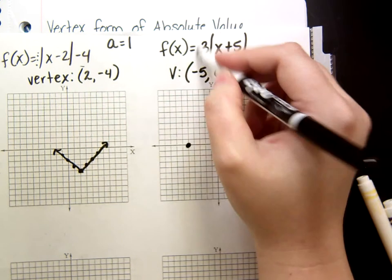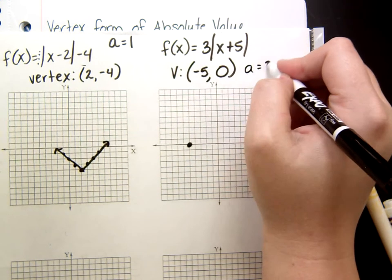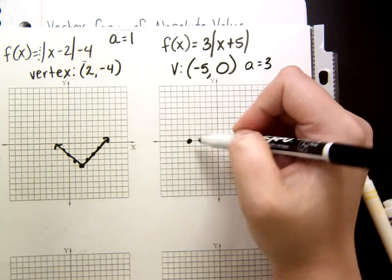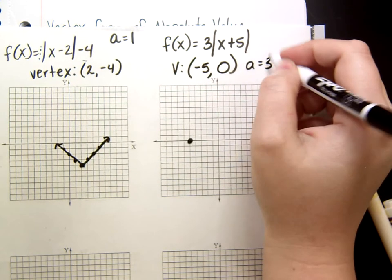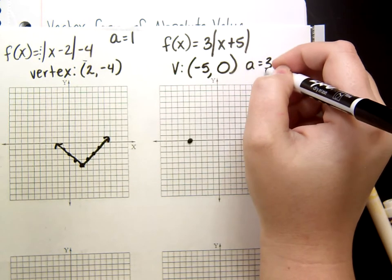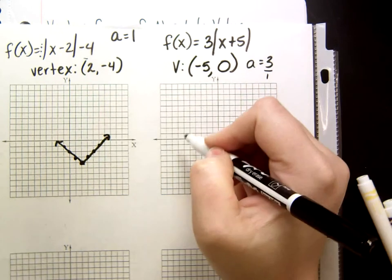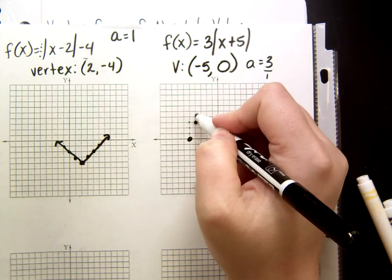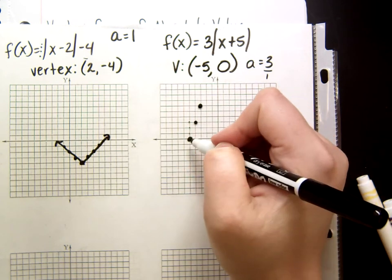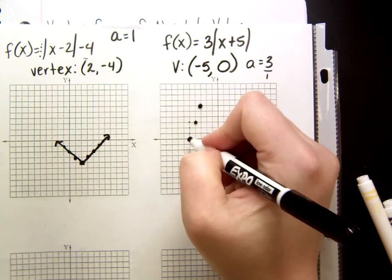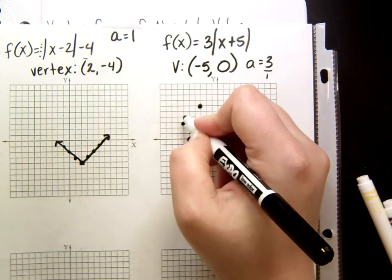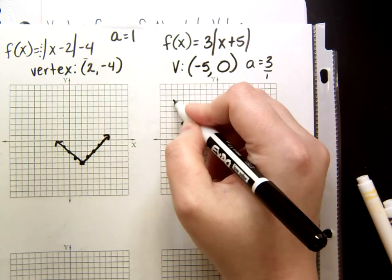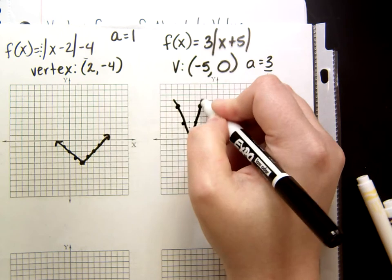And from here, I use this 3, the a value, to get my other points, because it's your slope. Remember, rise over 1, 3 can be written as 3 over 1. So, I'm going to go up 3, because it's positive 1, 2, 3, and right 1. On the other side, it's negative 3 over 1, so I'm going up and left. And there I have my equation.